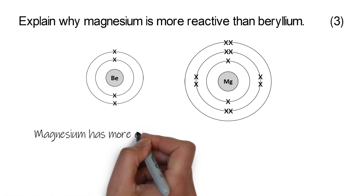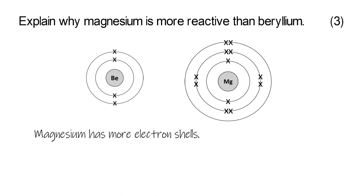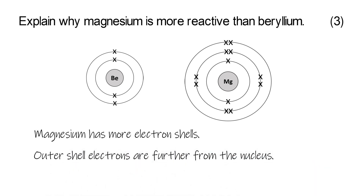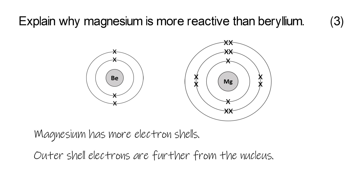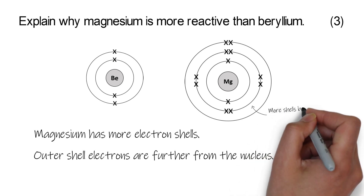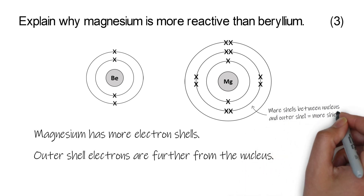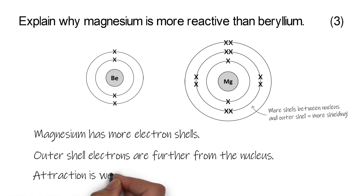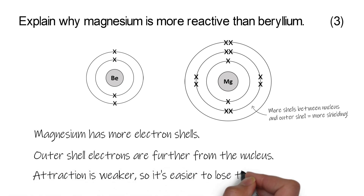So if you look at magnesium, it's a bigger atom — it's got more shells of electrons. That means there's a bigger distance between the nucleus and the outer shell electrons that it's trying to lose. It's trying to lose two this time. So the outer shell electrons are further away from the nucleus. You've also got that extra shielding because there are more shells in between the nucleus and the outer electrons. Both of those things mean that the attraction between the nucleus and the outer shell electrons is going to be weaker, and that means it's going to be easier to lose those electrons, which makes magnesium more reactive.